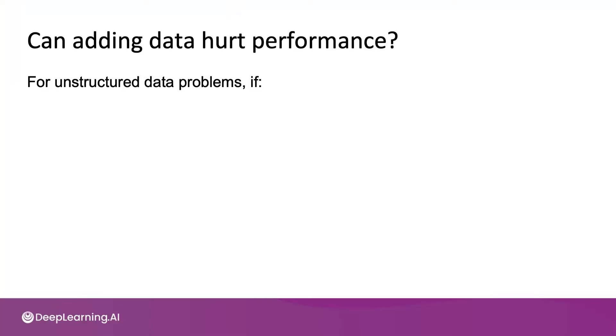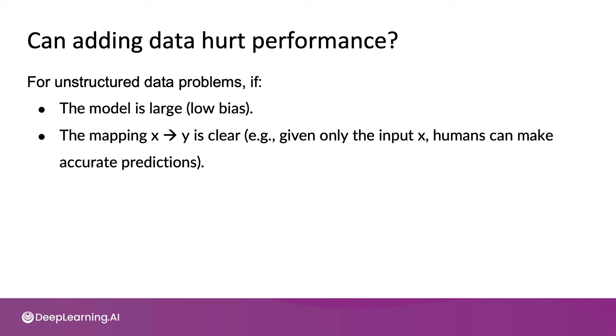If you're working on an unstructured data problem, and if your model is large, such as a neural network that has large capacity and thus low bias, and if the mapping from x to y is clear, meaning given only the input x, humans can make accurate predictions, then it turns out adding accurately labeled data rarely hurts accuracy.